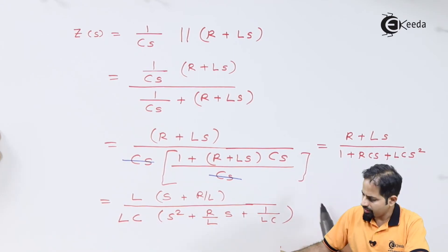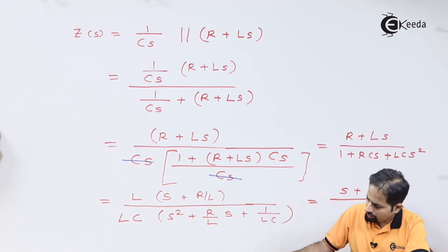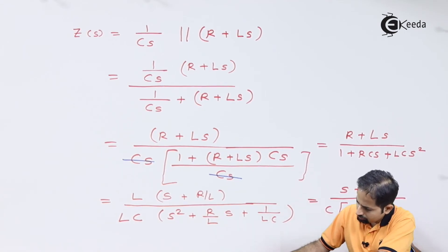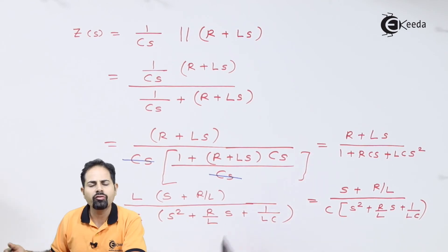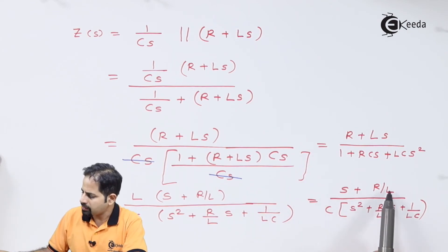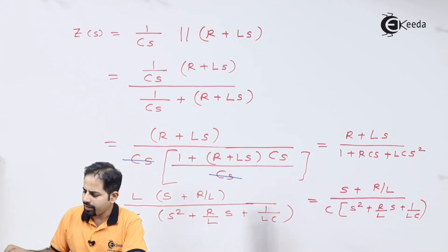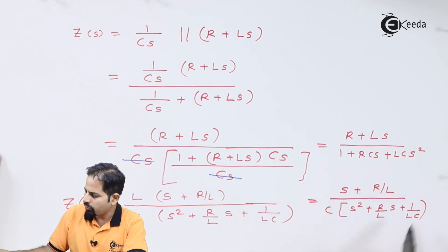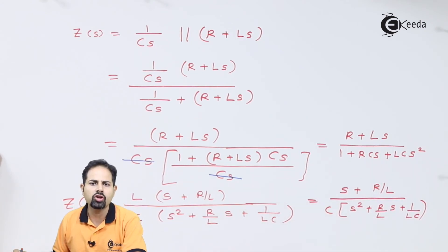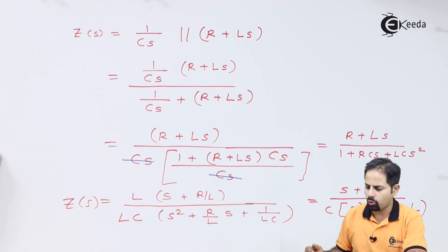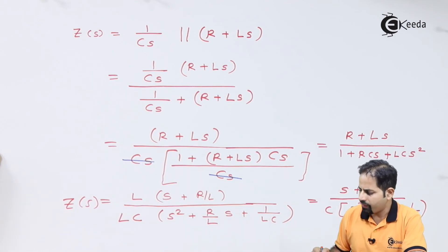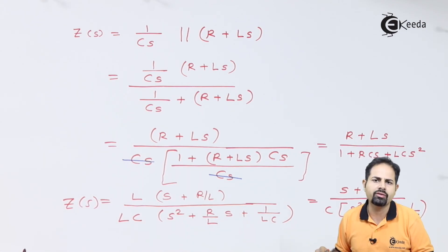The final answer is Z(S) expressed in terms of S. If you are given L = 1 henry, C = 1 farad, and R = 1 ohm, the numerator becomes (S + 1) and the denominator becomes (S² + S + 1). This is your Z(S). Using inverse Laplace transform techniques, you can also get it in the time domain. This is the required answer — it's a first problem so we took a very simple example.